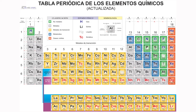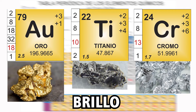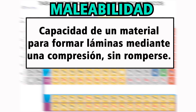Bueno, comencemos con los metales. Como se darán cuenta, estos se encuentran ubicados en la parte izquierda de la tabla periódica. Son todos los de color gris y amarillo. En general, los elementos metales tienen propiedades químicas y físicas muy características. Presentan brillo, unos más que otros, como el oro, el titanio y el cromo. Y tienen una propiedad cualitativa llamada maleabilidad, que quiere decir que tienen la capacidad de deformarse al aplicarles una fuerza de compresión, formando láminas sin que estos se rompan. Además, el calor aumenta considerablemente su maleabilidad.